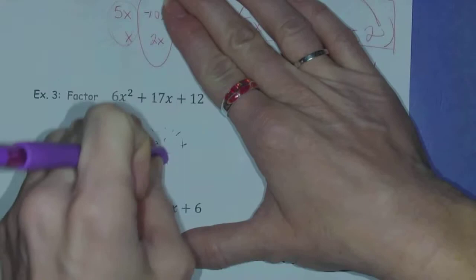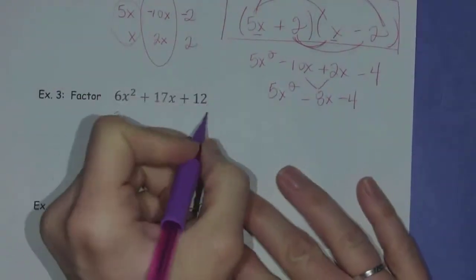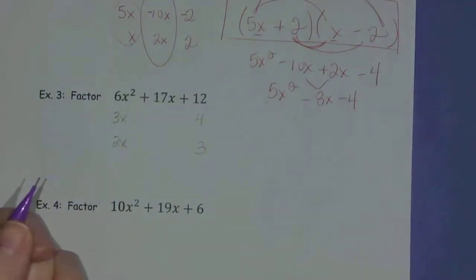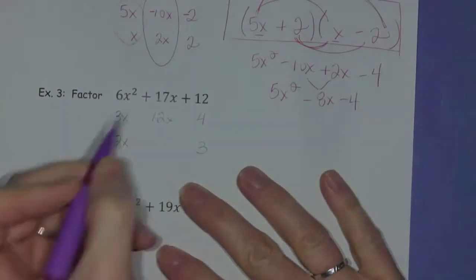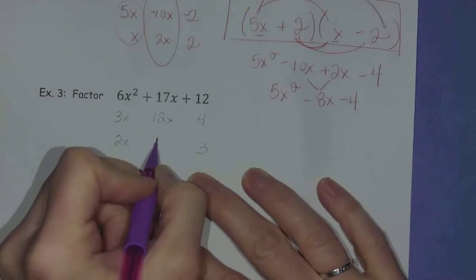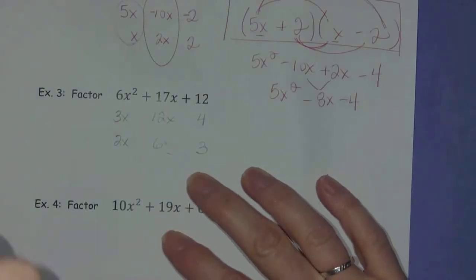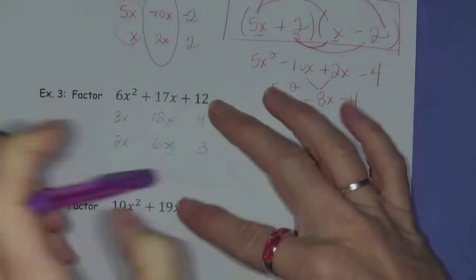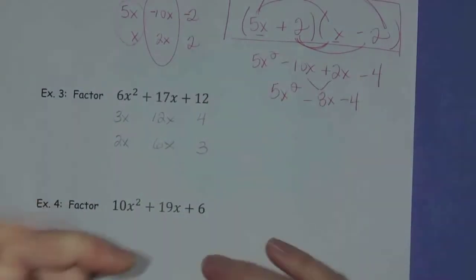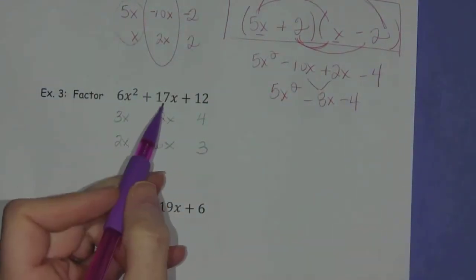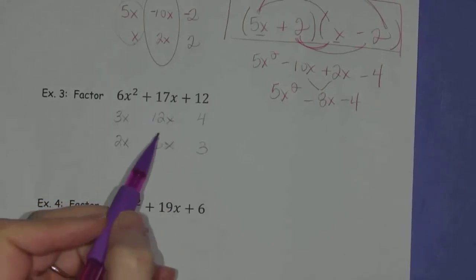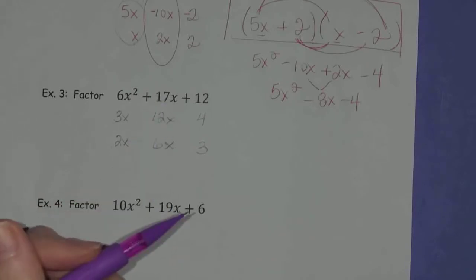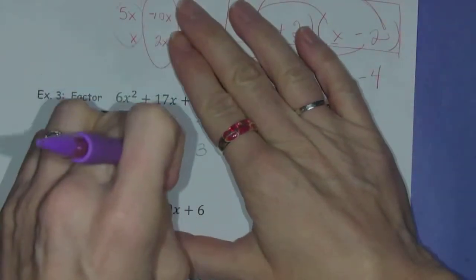All right, well, let me try something different. Let me try 4 and 3. All right, 4 times 3x is 12x and 3 times 2x is 6x. Can a 12x and a 6x add to a 17x? It can make an 18x, but no matter what signs I put on them, I don't see this adding up to a positive 17. So this isn't it.